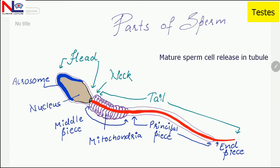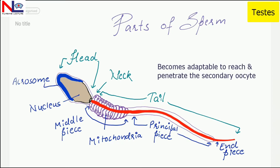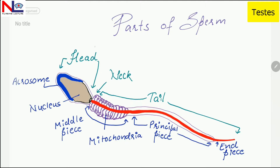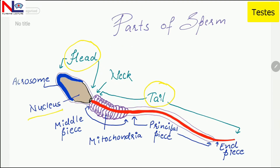As the mature sperm is released into the seminiferous tubule, it is more adaptable for reaching and penetrating a secondary oocyte. The sperm has two parts: the head and the tail. The head is four to five micrometers long and consists of the nucleus. At the tip of the nucleus there is a cap-like vesicle termed the acrosome, filled with enzymes — hyaluronidase and proteases — that help in penetrating the secondary oocyte.